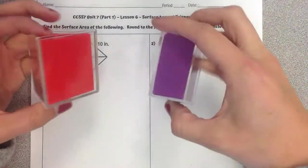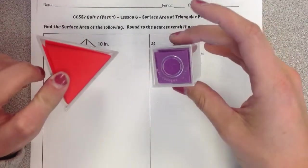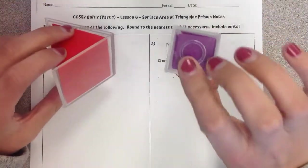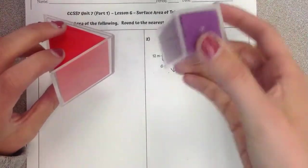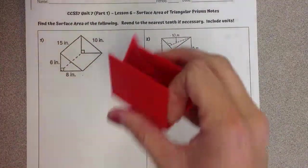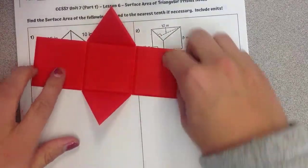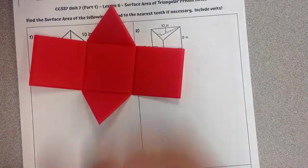So prisms are all the same, that their lateral sides are rectangles, but then they just have different bases. So the rectangular prism has rectangular bases, triangular prism has triangle bases. So since a triangle has three sides, we should have three lateral faces and then our two triangular bases.